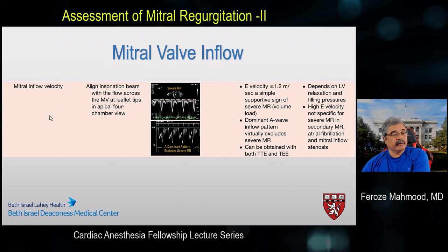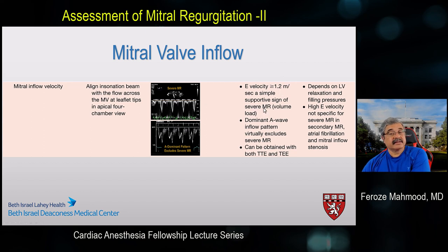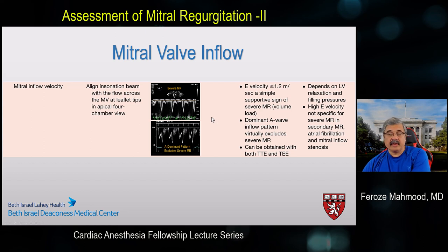Mitral inflow velocity is obtained by aligning the insonation beam with flow across the mitral valve at the leaflet tips to get E and A waves. In severe MR, the pattern looks like a restrictive pattern because of excessive volume inflow — an E velocity ≥ 1.2 m/s is a supportive sign of severe MR. A dominant A-wave pattern almost excludes severe MR, implying no significant volume crossing the mitral valve. However, this method is also dependent on LV relaxation and filling pressures, and a high E velocity is not specific for severe MR in secondary MR. It can also be problematic in patients with atrial fibrillation.